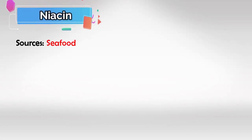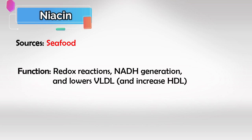Vitamin B3 is called niacin and it's found mainly in seafood. Niacin is important for redox reactions as well as NADH generation. It's also very important to know that niacin lowers blood VLDL and increases blood HDL.